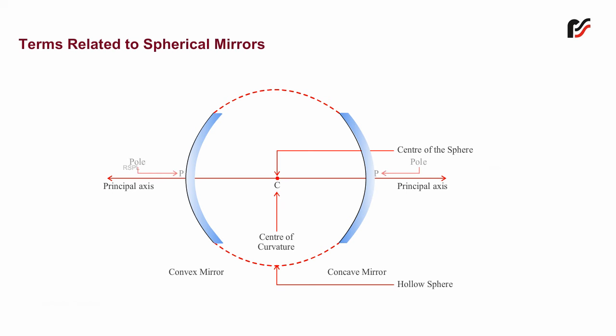d. Pole. The central point P of the reflecting spherical surface is the pole.